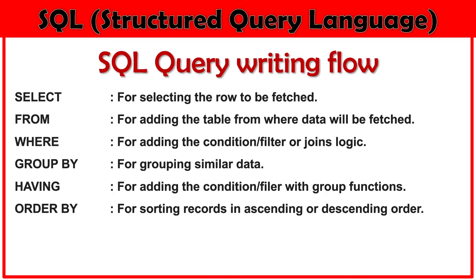After WHERE, we can use GROUP BY. If we want to show the data based on grouping of similar data, we use the GROUP BY clause. After GROUP BY, we have HAVING. HAVING is used whenever we need to add logic or validation on aggregate functions. I will create separate videos to explain the differences between HAVING and WHERE.